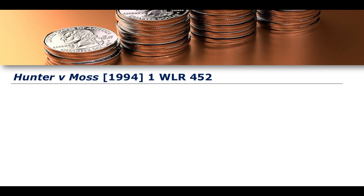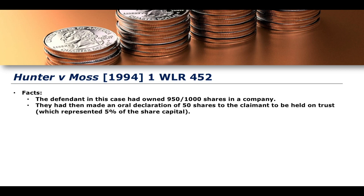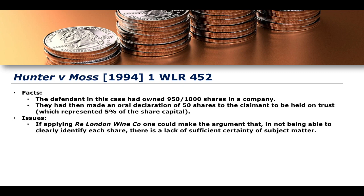Hunter v Moss from 1994 is a similar case but rules differently. The defendants owned 950 of 1,000 shares in a company and made an oral declaration of 50 shares to the claimant to be held on trust, representing about 5% of the share capital. Applying London Wine Corporation, you could argue that because we cannot clearly identify each individual share, there must surely be a lack of sufficient certainty of subject matter — just as customers couldn't clearly label which bottles of wine were theirs, you can't clearly delimit which of the 50 shares from the 950 are yours.